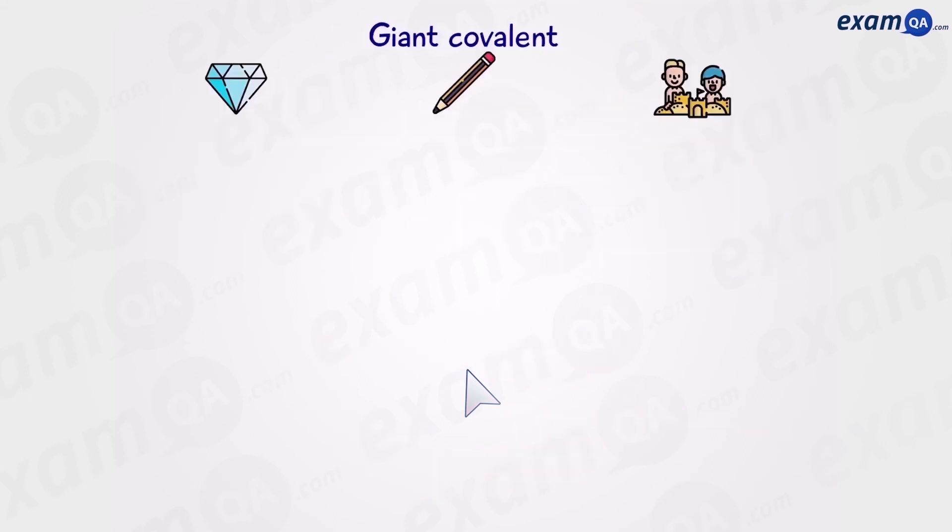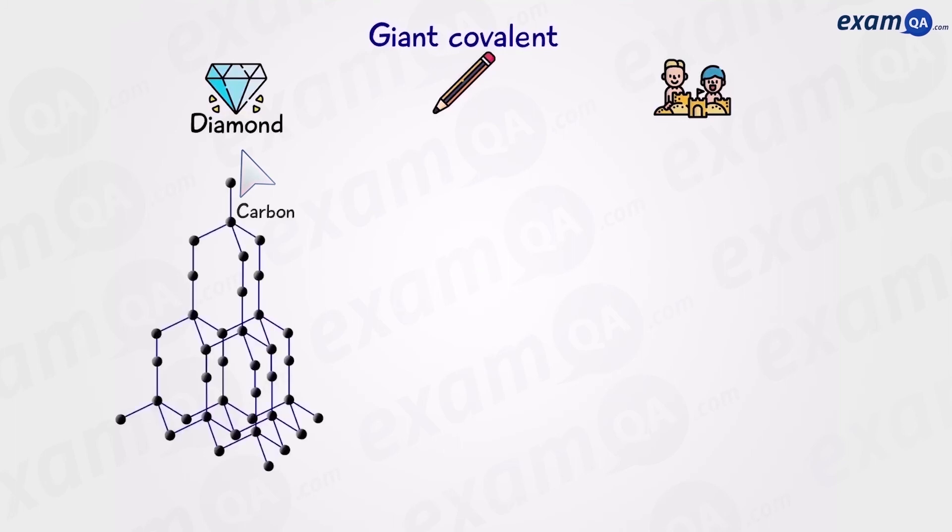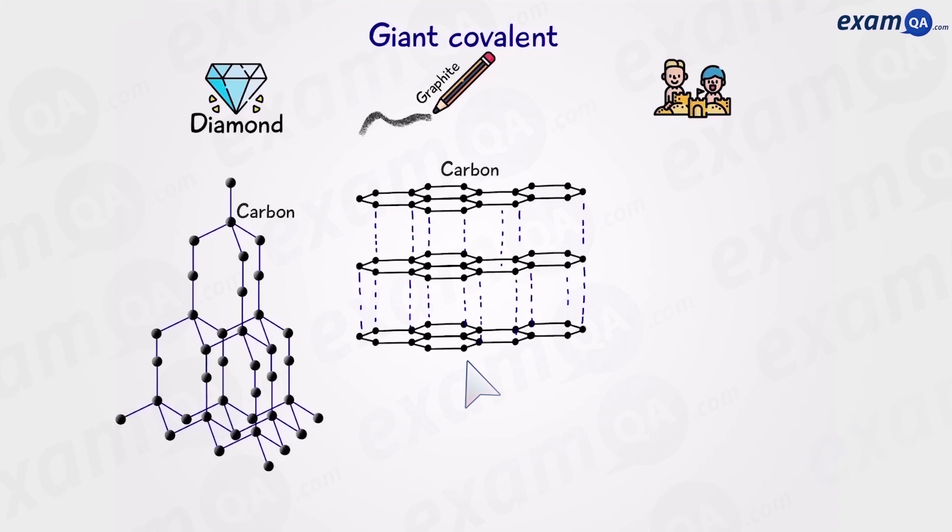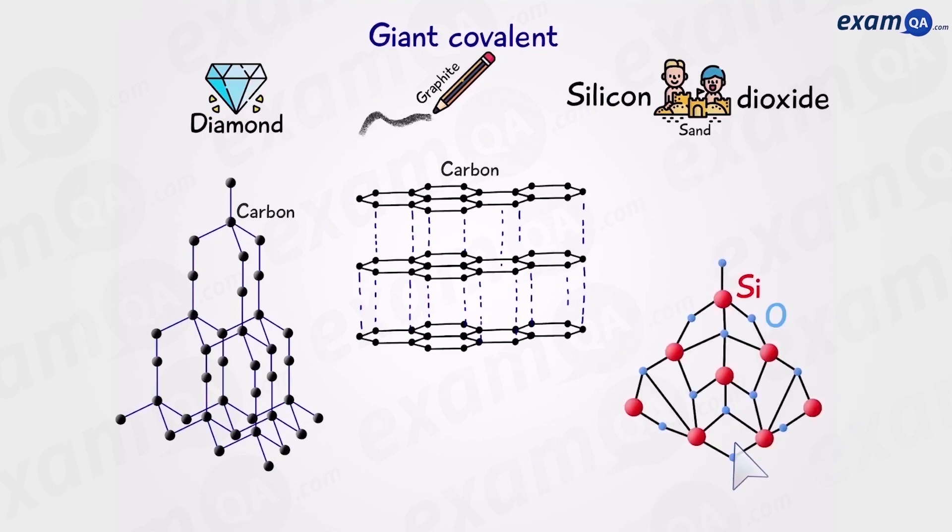The next type of covalent structure is also known as giant covalent structures. And we'll use three examples. Diamond, which looks like this, a pyramid made of only carbon atoms. Graphite, the substance that's found within pencil lead. This is made also of carbon, however, it looks slightly different. Here we have hexagonal rings made up in layers. And finally, silicon dioxide, in other words, sand. And this is also a giant structure made of silicon and oxygen atoms held together.